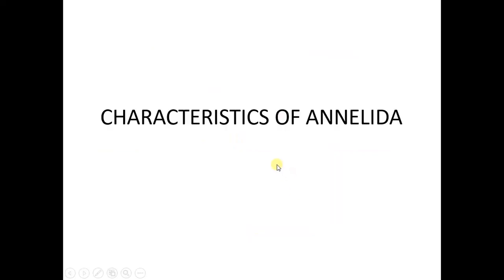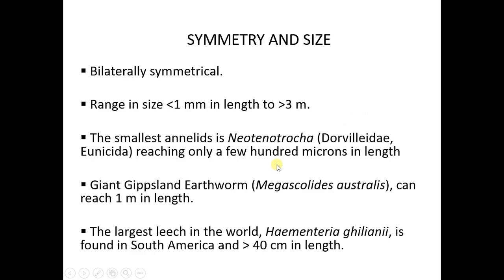What are some of the characteristics of these annelids? Let's talk about symmetry and body size. In symmetry, they are bilaterally symmetrical — in other words, from the dorsal to the ventral, you can make a clean division. By size, they range from anything less than one millimeter to something up to one meter. There are some specific examples of smaller and larger worms on this particular slide.